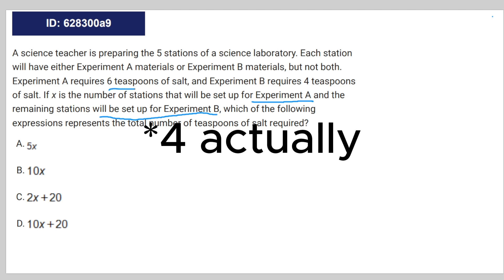So you really just need six pieces of vocabulary to make the entire equation. We have six, we have two numbers: six and four, and then we have X that represents the number of stations for A.